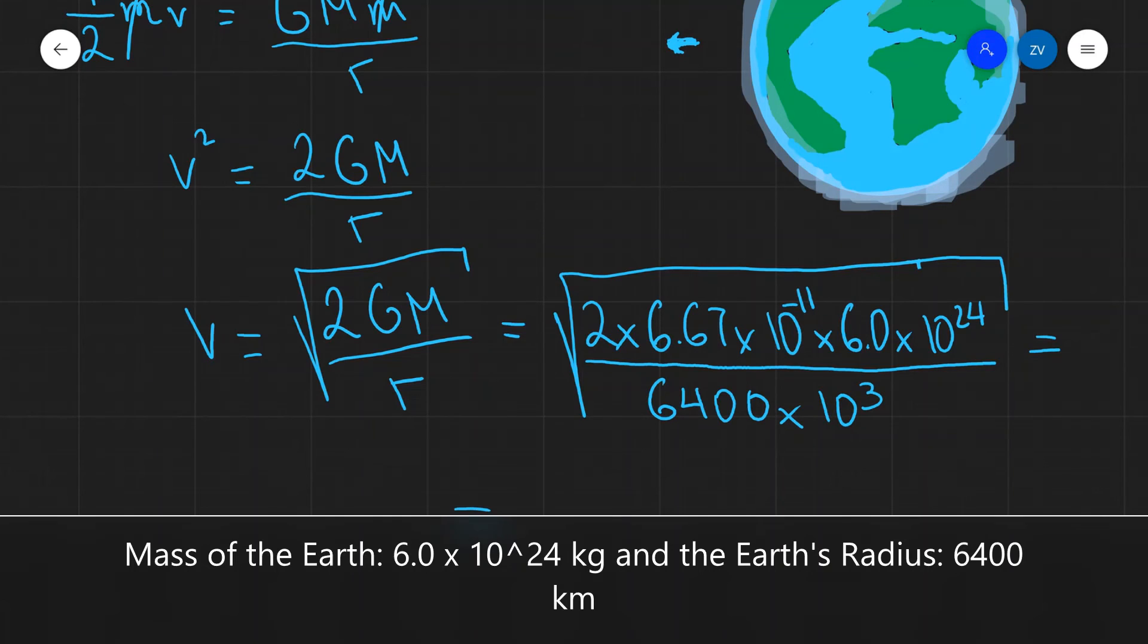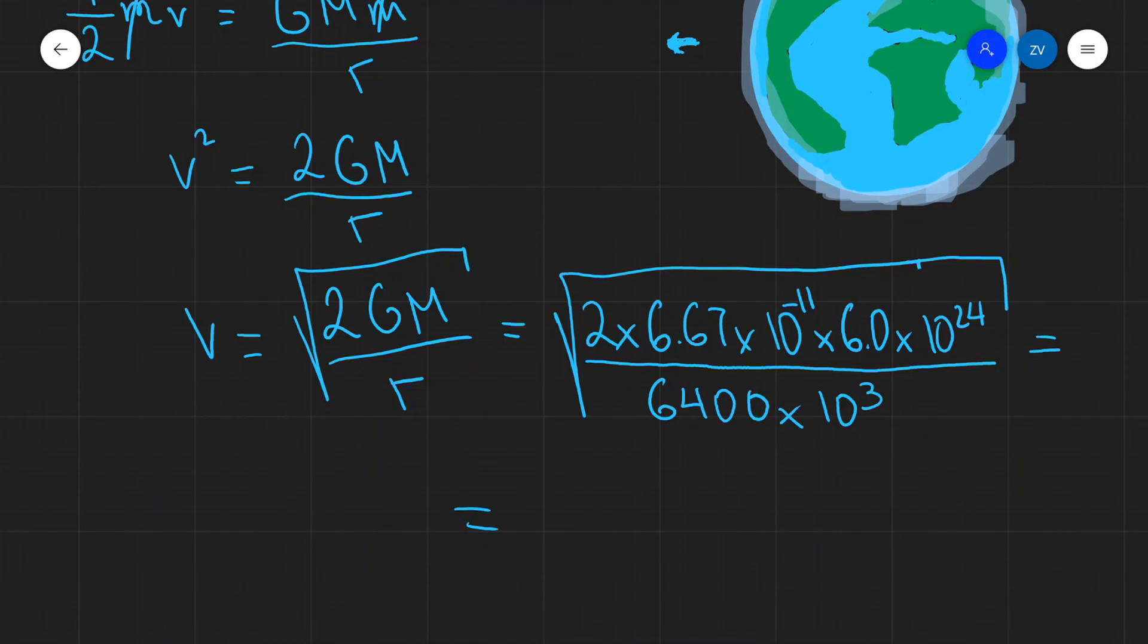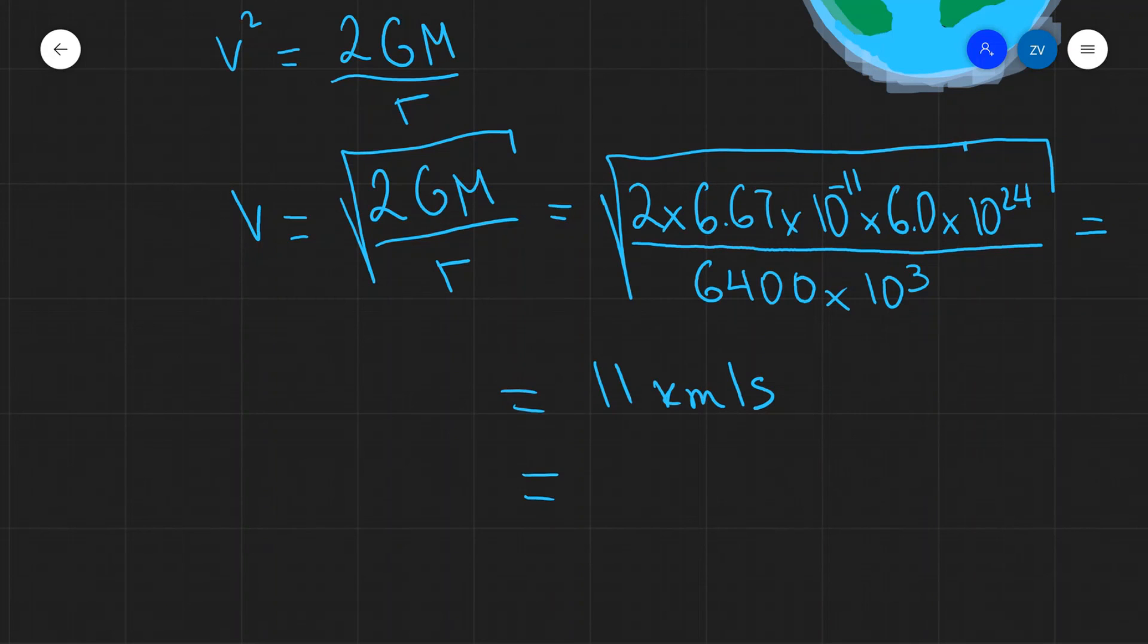Putting this into a calculator, we get about 11 kilometers per second to two significant figures. In SI units, this is approximately 11,000 meters per second.